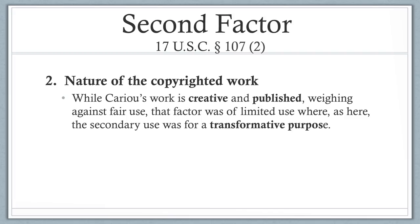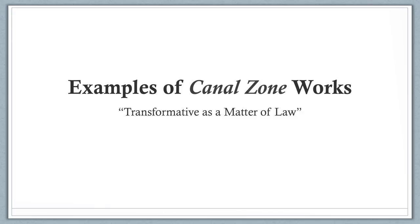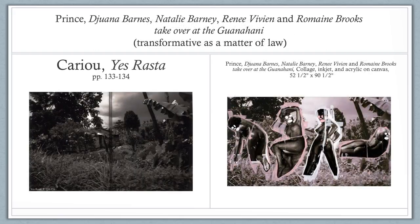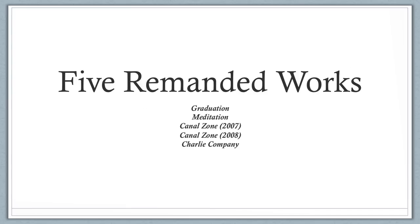Concerning the second fair use factor — the nature of the copyrighted work — the court reasoned that while Cariou's work is creative and published, weighing against fair use, that factor was of limited use where the secondary use was for a transformative purpose. Finally, evaluating the third factor — the amount and substantiality of the portion used in relation to the copyrighted work as a whole — the court found that Prince's use of Cariou's work varied from work to work. Here are a few examples of Canal Zone works that the Second Circuit deemed transformative as a matter of law. Five of Prince's works, however, did not differ sufficiently for the Second Circuit to make a determination about their transformative use as a matter of law and were remanded back to the district court for determination under the proper standard.